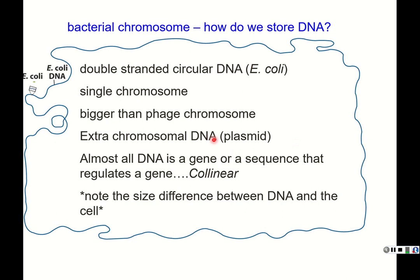In the biology or biochemistry laboratory, we take advantage of plasmids by introducing these small circles of DNA into bacteria cells to express a protein we want to purify — that's historically how it's done. Almost all bacterial DNA is in a gene or a sequence that regulates a gene. Bacteria don't have the same amount of DNA that is not for expressing or regulating a gene as you find in eukaryotic cells.